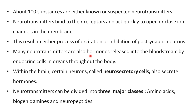Many neurotransmitters are also hormones released into the bloodstream by endocrine cells in organs throughout the body. Within the brain, certain neurons called neuro-secretory cells secrete these hormones. Neurotransmitters can be divided into three major classes: first, amino acids; second, biogenic amines; and third, neuropeptides. We will now learn about all three major classes.